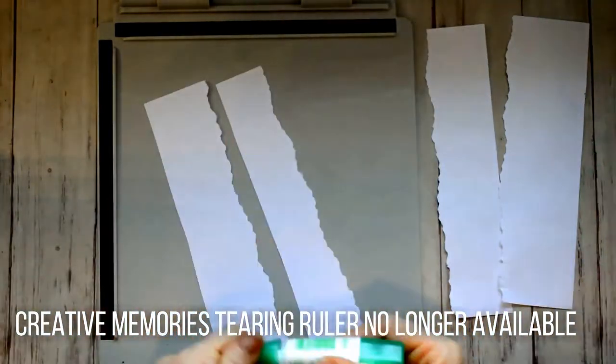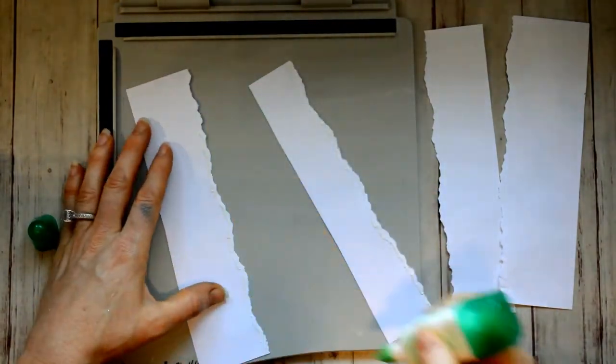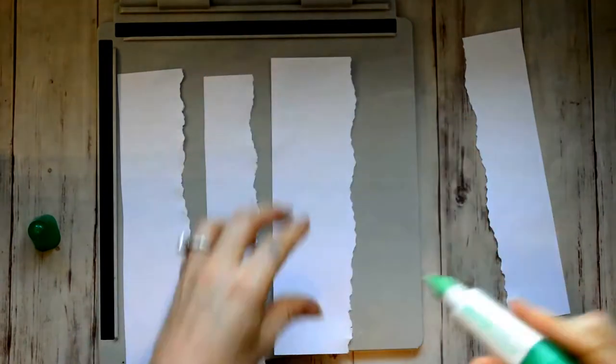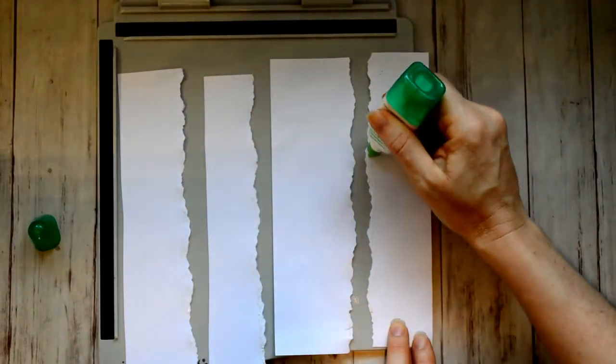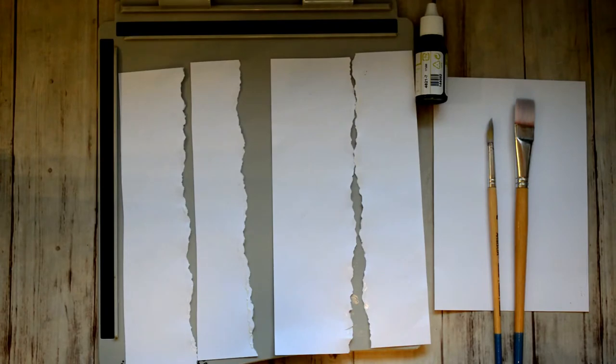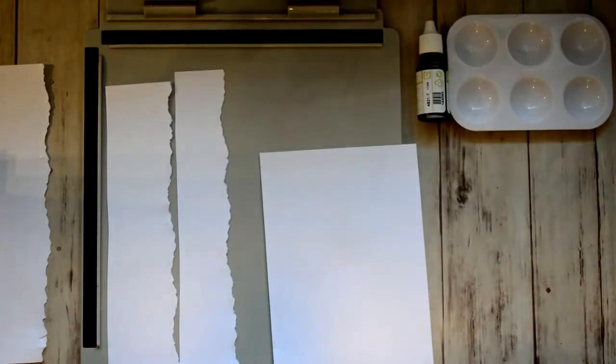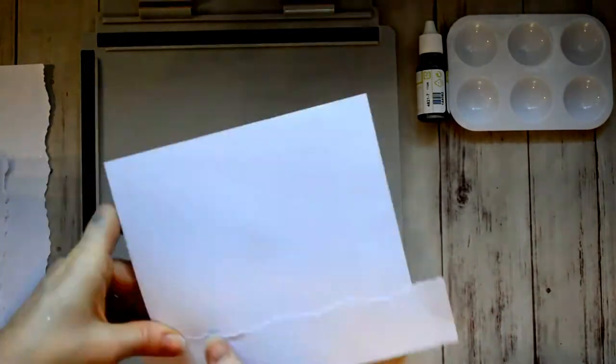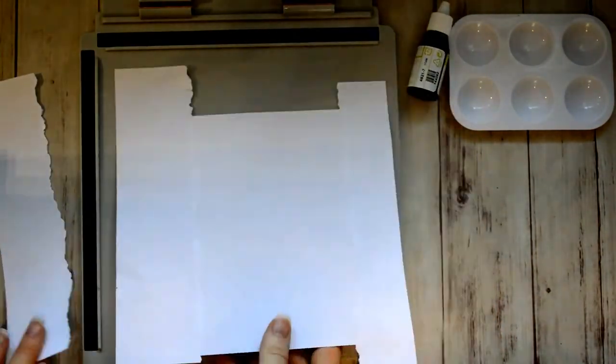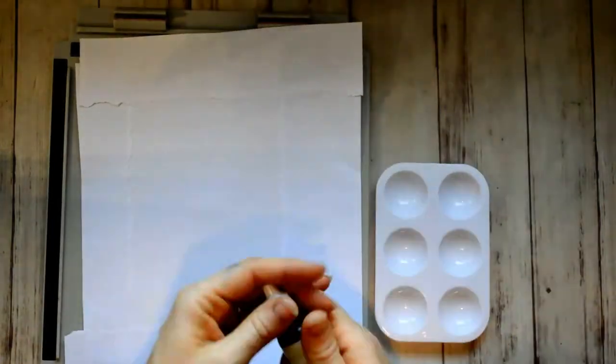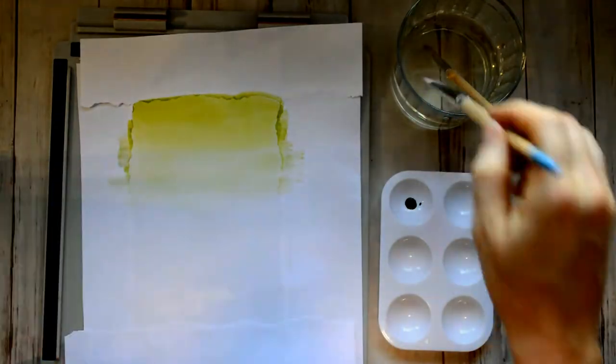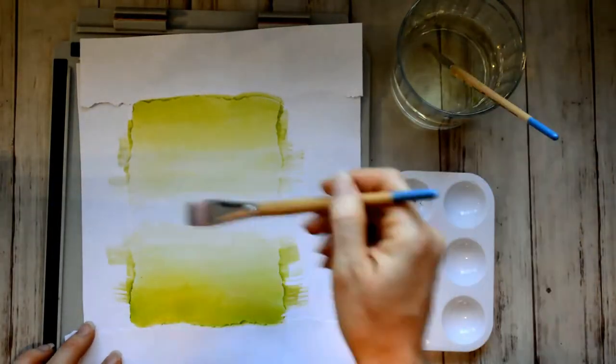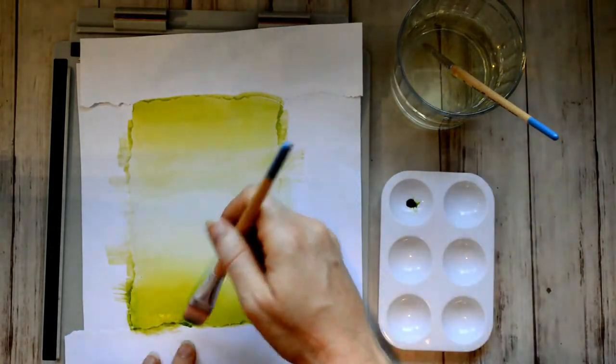I'm using this little ruler that I've had forever. I don't think you can buy it, but you can get a similar product. And I tore four strips of paper. Now I'm applying Tombow glue, and this glue, if you apply it to paper, it becomes like a mask glue and it's repositionable. I don't have any other masking products, so anytime I need a mask, I use this Tombow glue, and so far it's worked perfectly for all my needs.